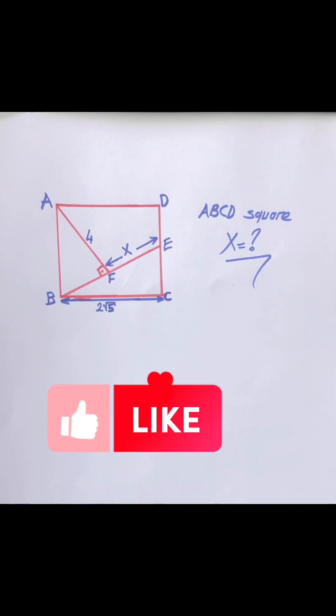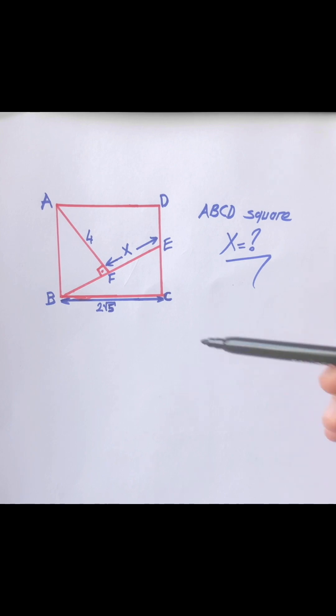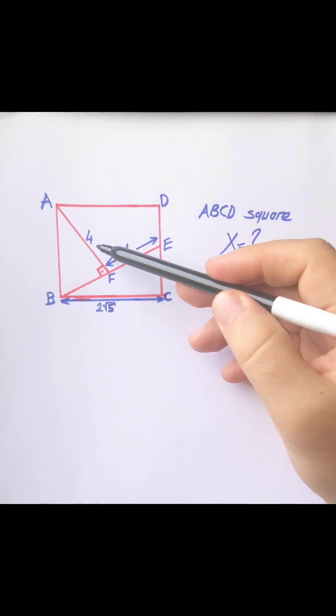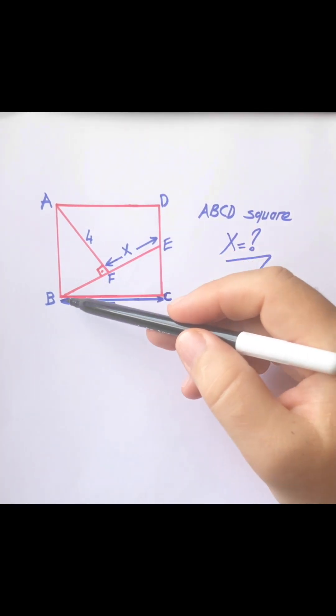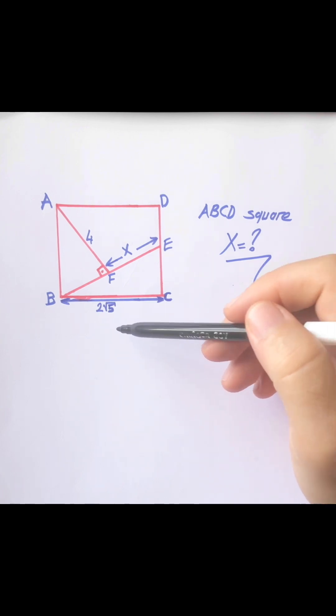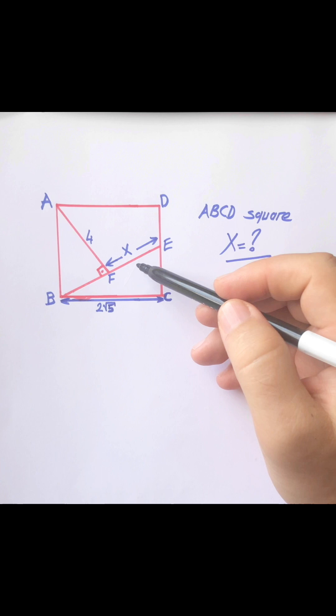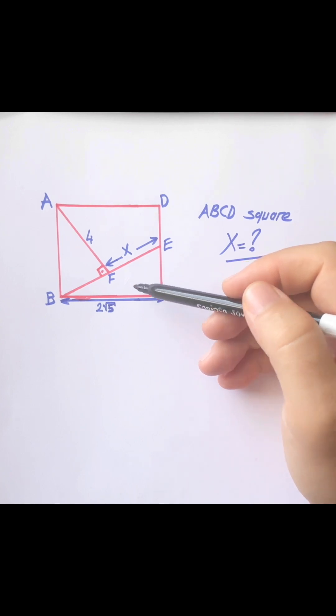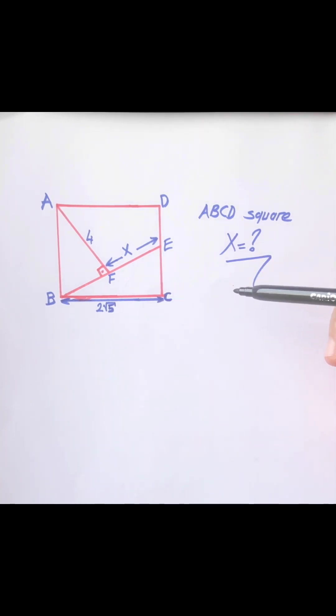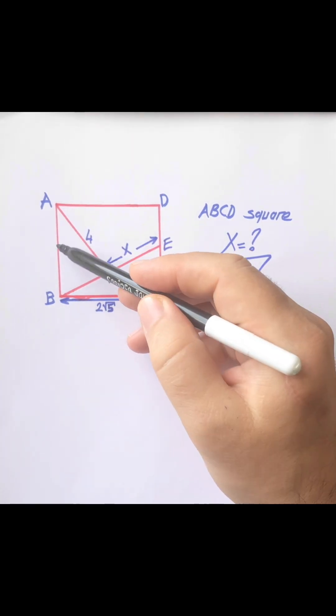Hello everyone, today we have square ABCD where AF is 4 units, BC is 2√5, and FE is X. What is the value of X? We know that a square has four equal sides, so AB, AD, DC, and BC are all equal.